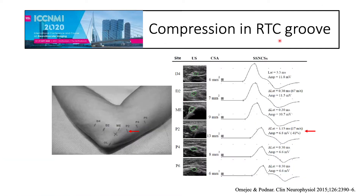Let's talk about compression in the retroepicondylar groove. This is the arm — proximal on the left, distal on the right — and this is the medial epicondyle. In this case, the cross-sectional area of the ulnar nerve was largest 2 cm proximal to the medial epicondyle, and in the segment between the medial epicondyle and that 2 cm proximal point, the conduction velocity was also the lowest, situating the lesion to this area.